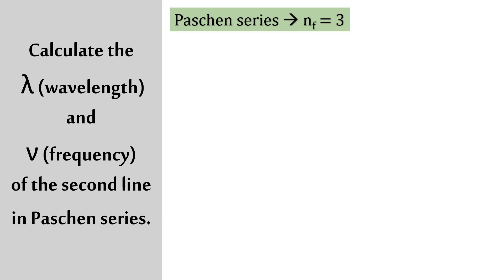This is super important to know. Remember the mnemonic: leman, balik, pasang, bracket, fun. Leman is number 1, balik is number 2, pasang is number 3. Leman is for Lyman, balik is for Balmer, and pasang is for Paschen. Therefore, Lyman: n_final = 1; Balmer: n_final = 2; Paschen: n_final = 3.